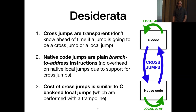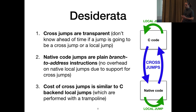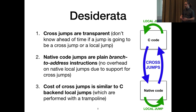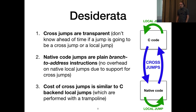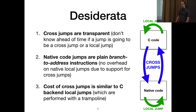Here's the list of conditions we think are necessary for the solution to be a good one. First, cross-jumps should be transparent — the code that calls a function shouldn't have to check if the function was compiled with the native back-end or the C back-end; it should just call it using its own calling convention. That means existing code shouldn't slow down when not doing a cross-jump. Also, because we're working on the native back-end for performance reasons, we insist that a function call from native code is a simple branch-to-address instruction. Finally, the cost of a cross-jump should be similar to the cost of a call using a trampoline.